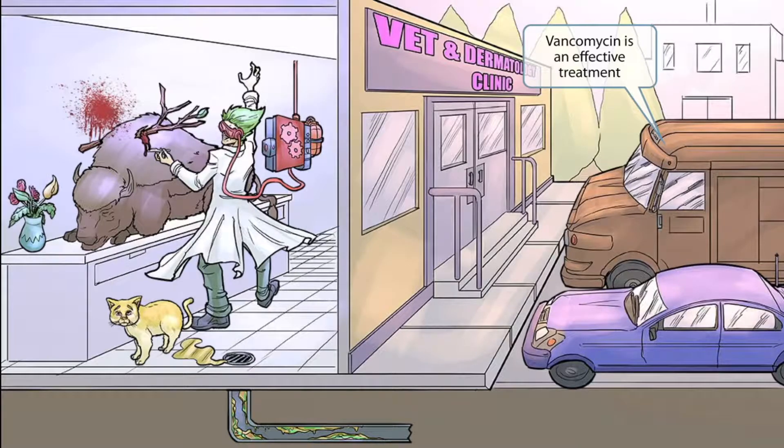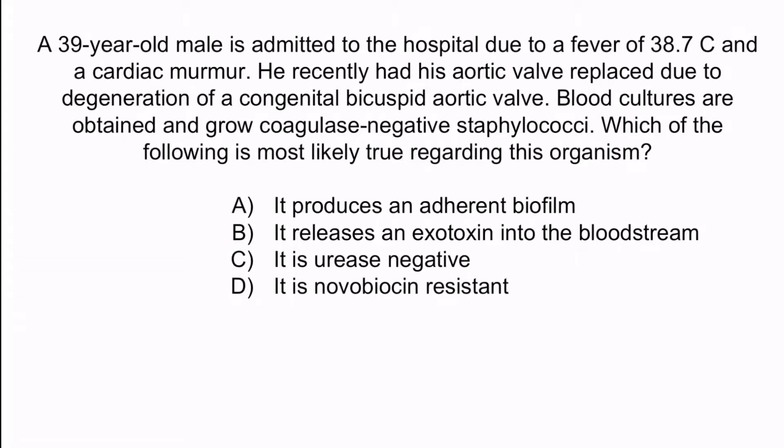Now that we've covered the image, let's review with a question. A 39-year-old male is admitted to the hospital due to a fever of 38.7 degrees Celsius and a cardiac murmur. He recently had his aortic valve replaced due to degeneration of a congenital bicuspid aortic valve. Blood cultures are obtained and grow coagulase-negative staphylococci. Which of the following is most likely true regarding this organism? A: It produces an adherent biofilm. B: It releases an exotoxin into the bloodstream. C: It is urease-negative. Or D: It is novobiocin-resistant.